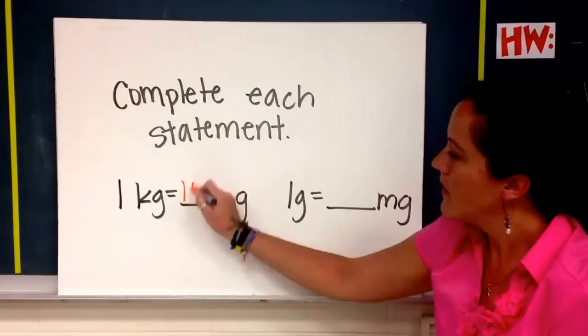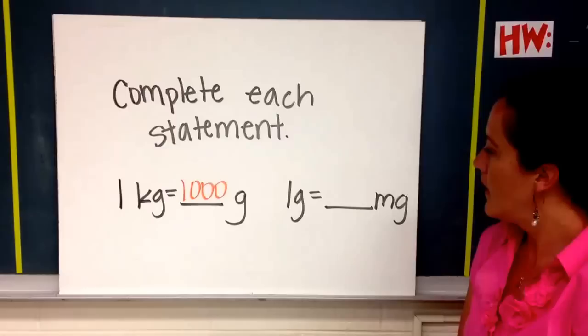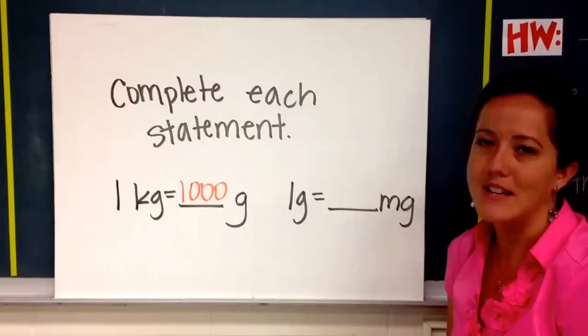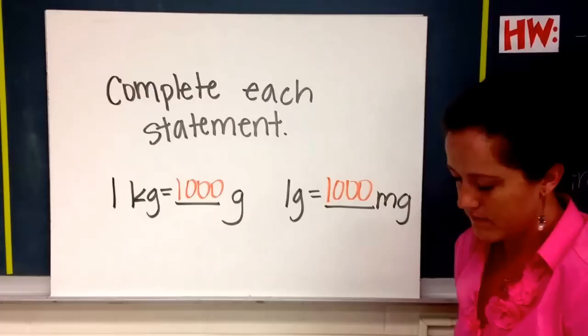One kilogram measures the same thing as 1,000 grams. And one gram is the same as how many milligrams? We said yesterday that milli means 1,000. So the number we'll write here is also 1,000.